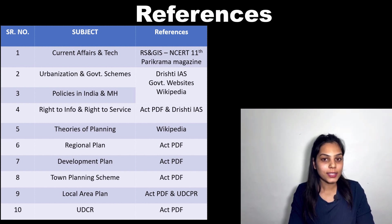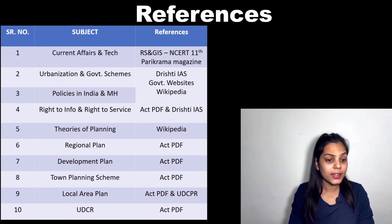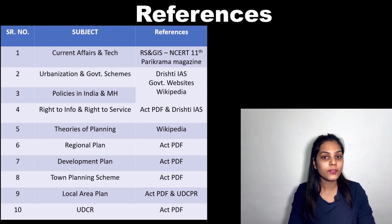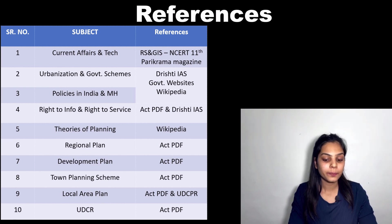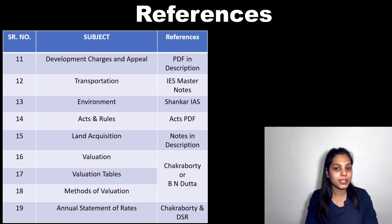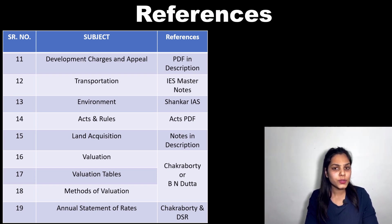For theories of planning, since it is a theoretical subject, you can study it from Wikipedia. For regional plan, development plan, town planning scheme, UDCR, and local area plan — all of these will be found in the Act PDF. That Act PDF is a very lengthy PDF, but if you study it you will go through all the required sections. For development charges and appeal, we have provided a link in the description. For transportation, you can refer to the Justo Khanna book, or if that is too big, you can use IAS master notes.